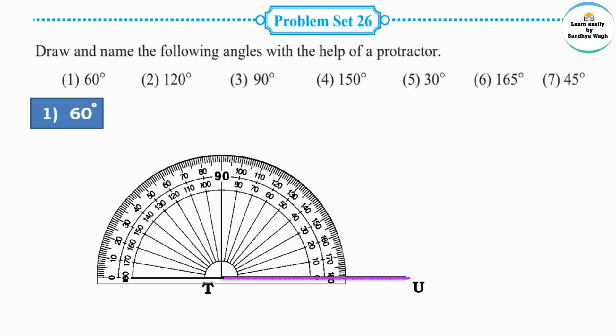The first arm of the angle is on the right side, so we can count on the protractor from the right side. We need to draw a 60 degree angle, so we will count up to 60 degrees.